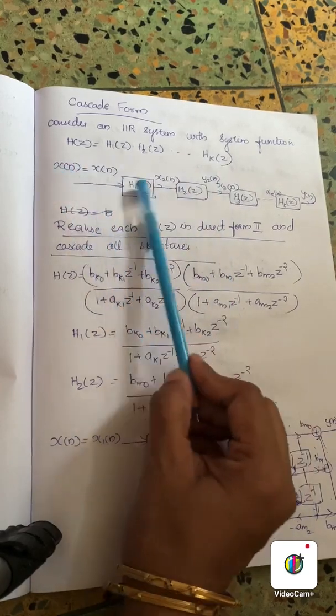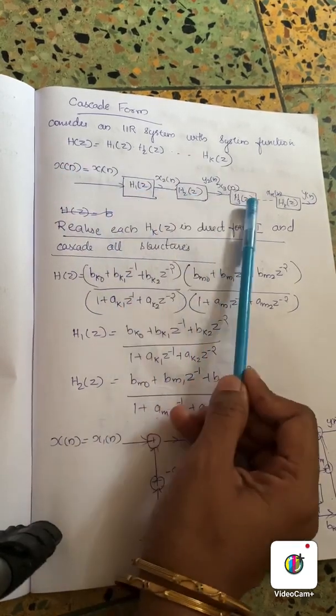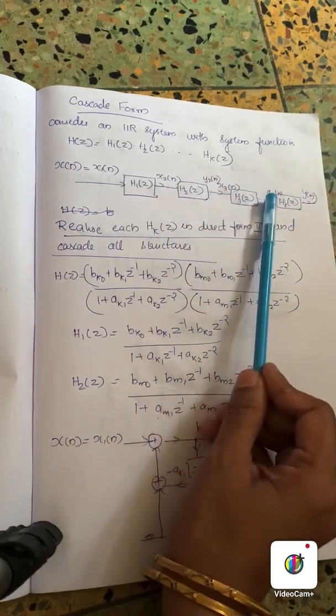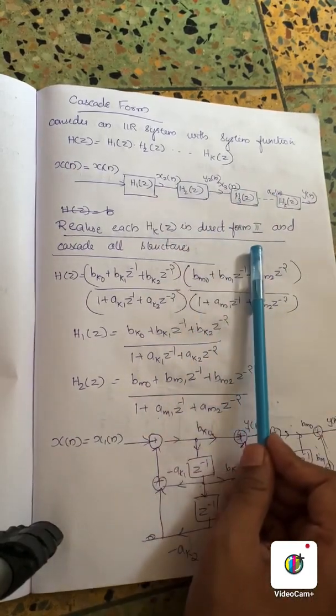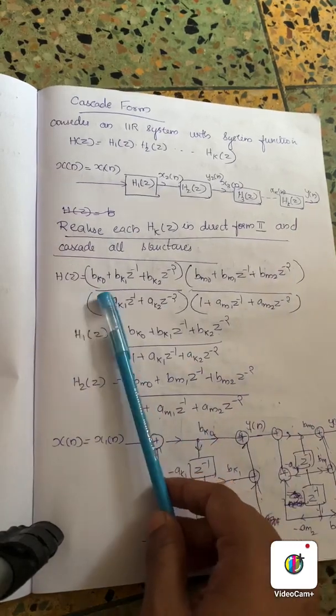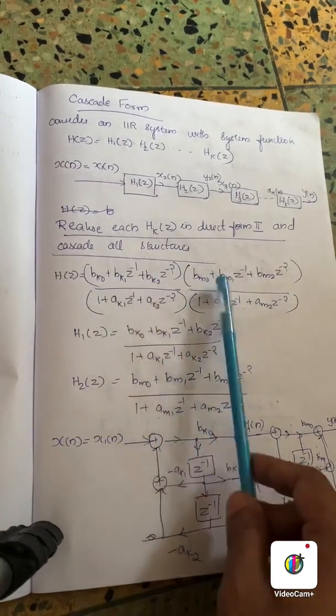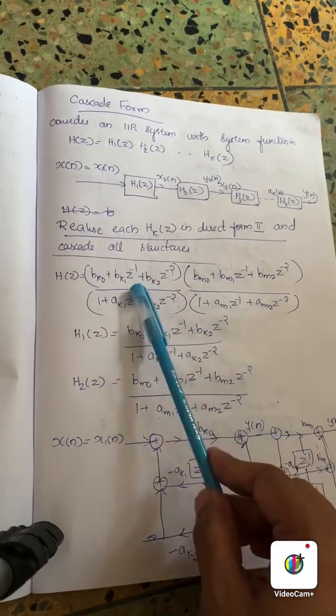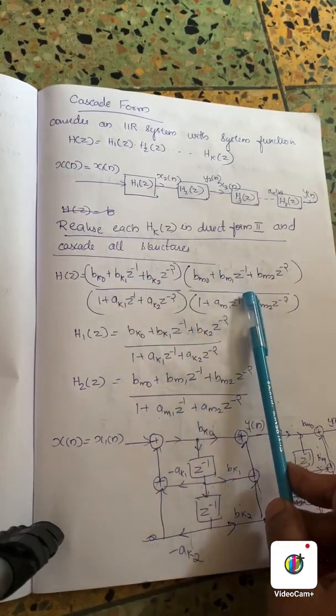Here we have an example of H1 of Z, H2 of Z, and Hk of Z. We are going to talk about Direct Form 2. Now we have two functions. This is one function, this is one function. This function is H1 of Z and this function is H2 of Z.